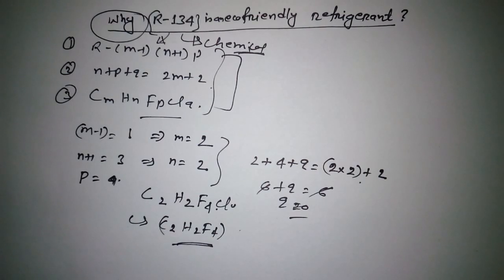Now here's the concept you need to grab. In this refrigerant, as you can see, the chlorine atom is zero, and only the chlorine atom out of all these atoms has the capacity to deplete the ozone layer. Because this refrigerant has zero chlorine atoms, or is a chlorine-free refrigerant, that's why this is known as an eco-friendly refrigerant.